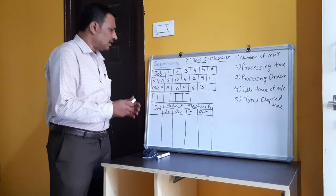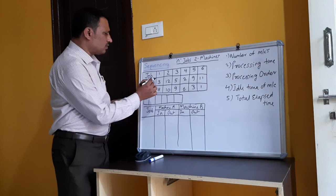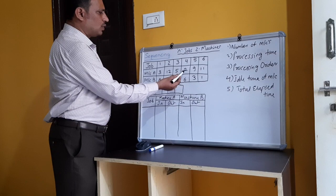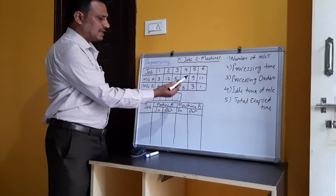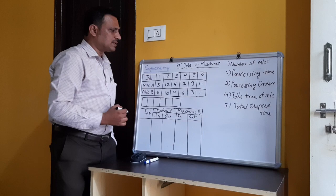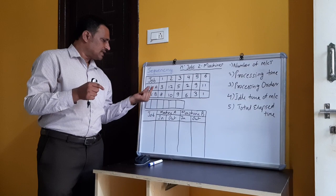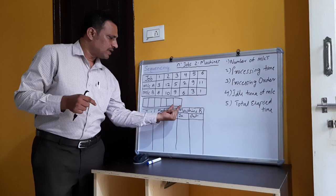To make the sequence, we look at the processing times. We must find the least processing time across all jobs and both machines. Machine A has processing times: 3, 12, 5, 2, 9, 11. Machine B has: 8, 10, 9, 6, 3, 1. The overall least processing time is 1, on machine B for job six. The rule is: if the least processing time is on machine A, place that job towards the left side.